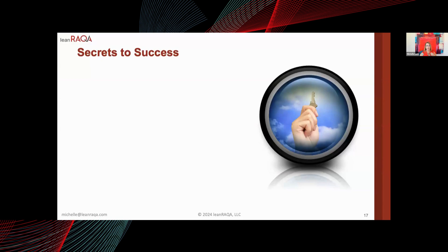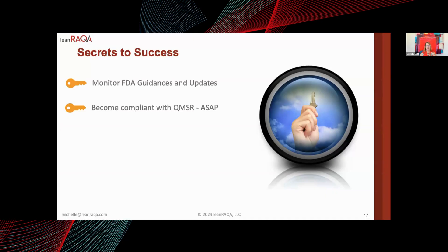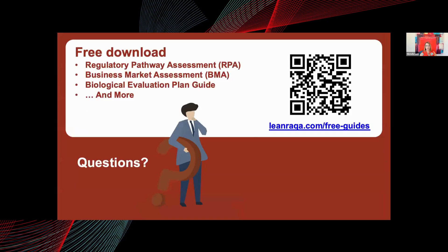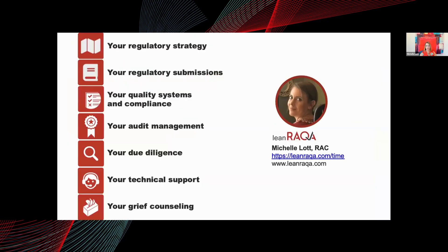For success in the US market: monitor FDA guidance documents, updates, and press releases to know their current thinking ahead of time. Become compliant with the Quality Management System Regulations (QMSR) as soon as possible — the clock is ticking with about a year and a half left to transition your QMS. Ensure you've selected the right regulatory pathway via the pre-submission process with the FDA, and use pre-submissions to understand FDA's position while leveraging the Breakthrough and STEP programs for expedited pathways. There are many resources on my website to help you navigate all of this.